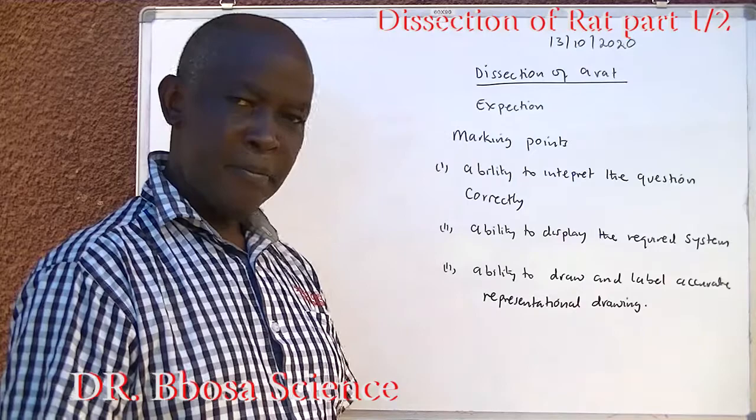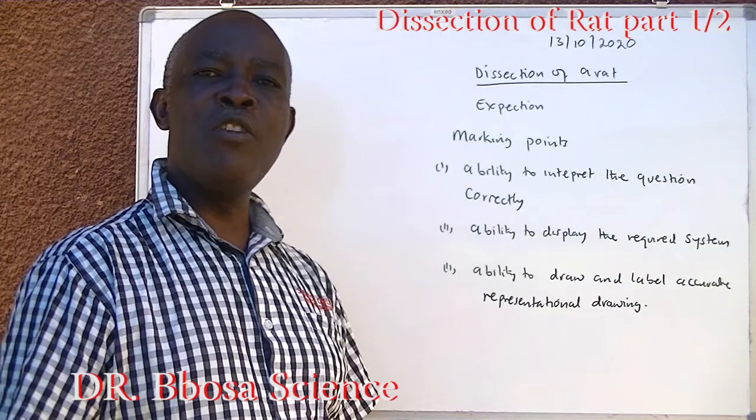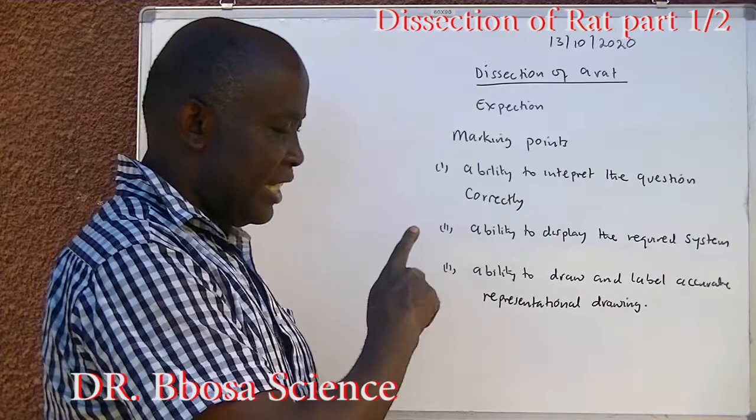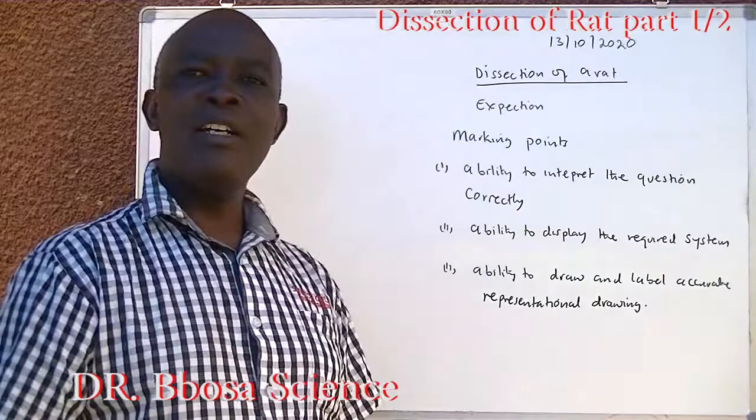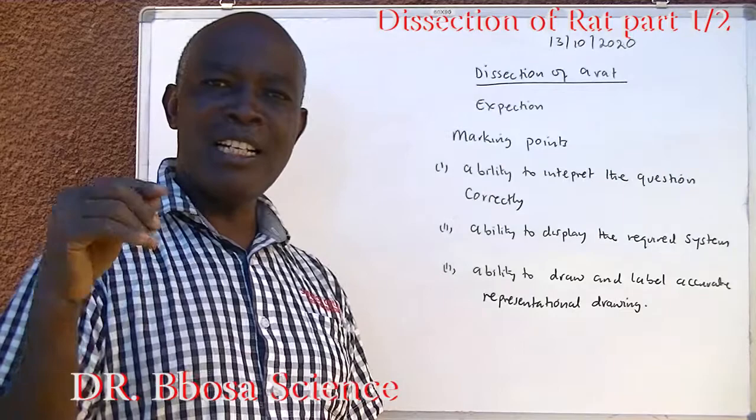We draw what we have displayed, not what we think should be the drawing. Even if you know the drawing of the system required, it is advisable to dissect so that you get the actual representation drawing from the dissection. Because sometimes they may limit you to what structures have to be labeled, and if you include any other structure which is not asked in the question, you will be penalized.